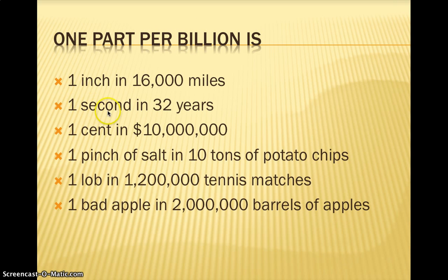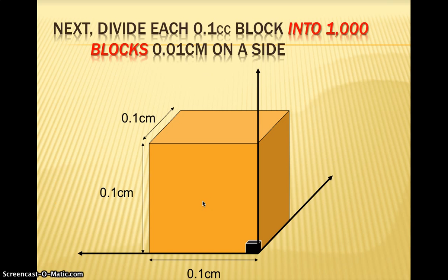One part per billion is equivalent to one second in 32 years — this one second out of the next 32 years of your life — or one cent in $10 million, or one pinch of salt in 10 tons of potato chips. So now let's try to get a sense of one part per trillion.